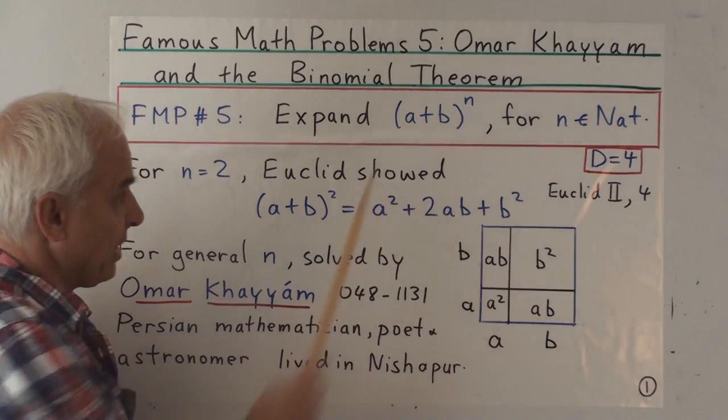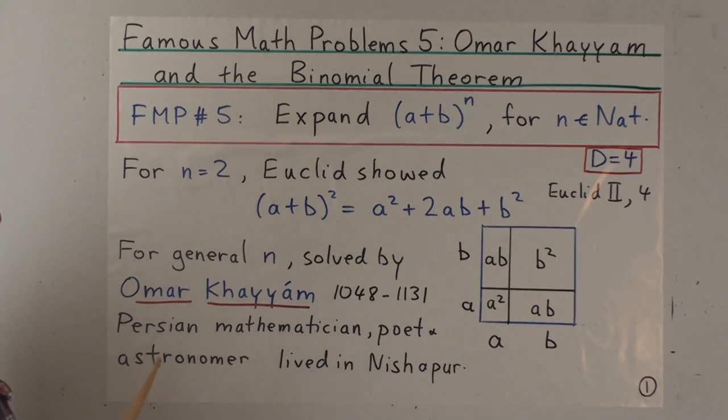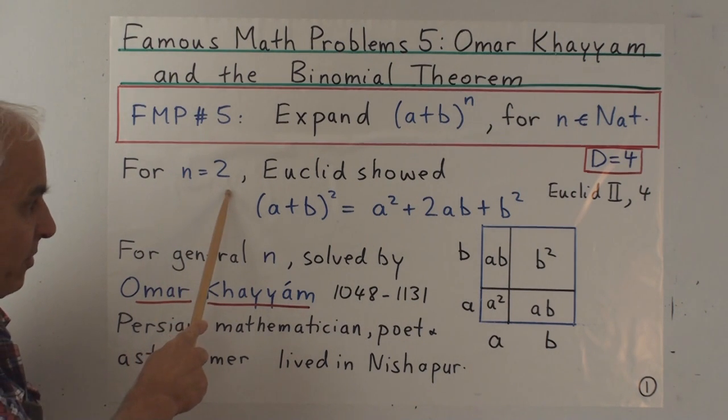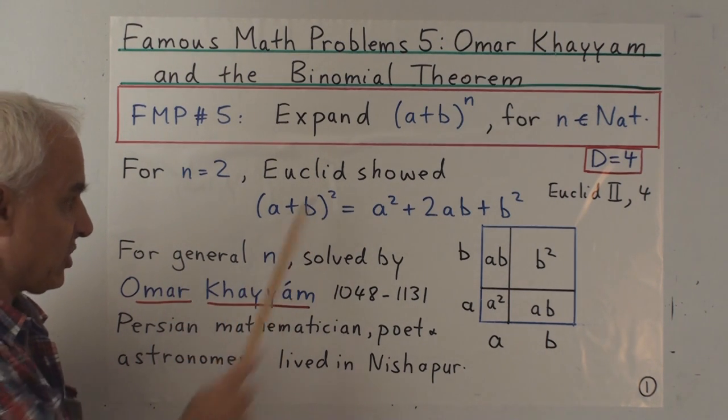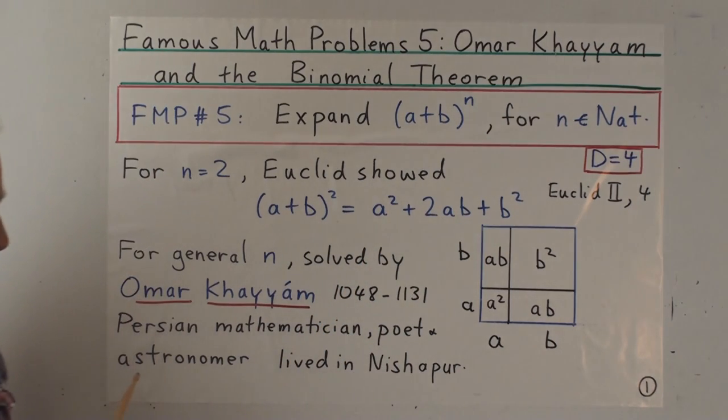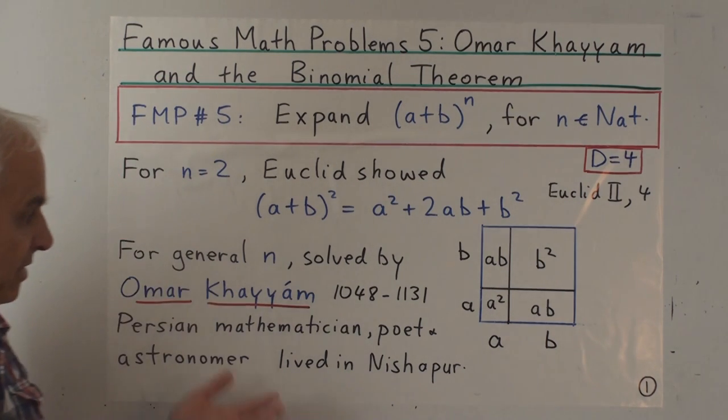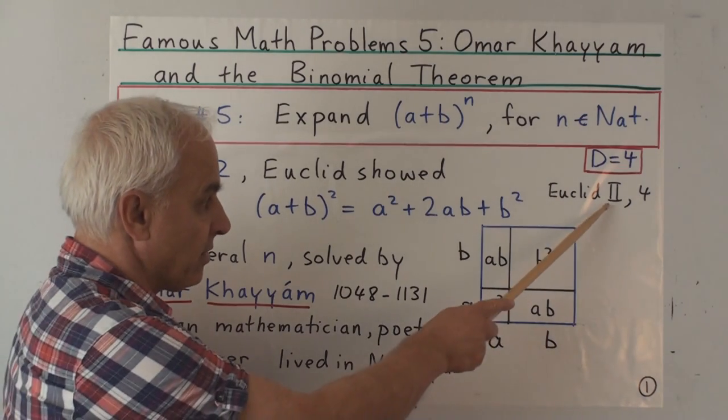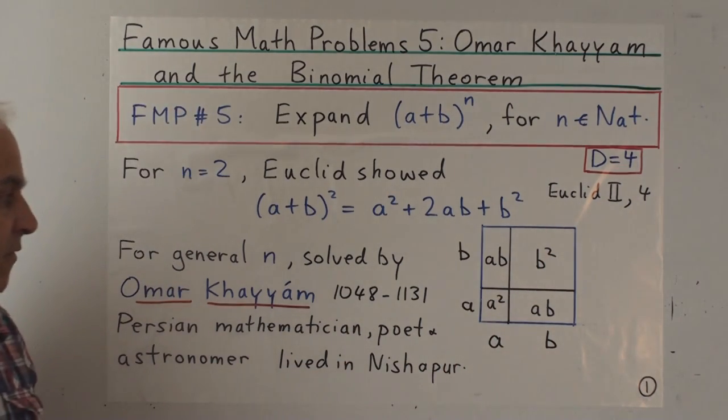All right, so the simplest case, other than the trivial case of n equals one, is when n equals two, when we're expanding a plus b squared. And all high school students know that that expands as a squared plus 2ab plus b squared. And this was first understood by the ancient Greeks and clearly enunciated in Euclid, book two, part four.